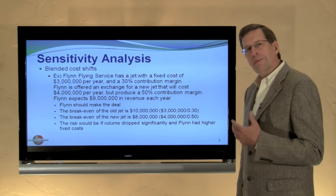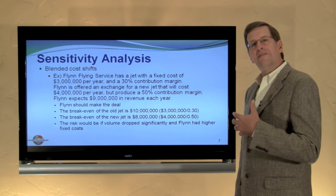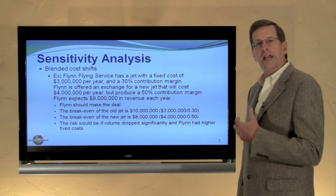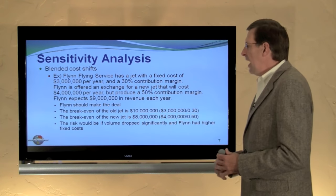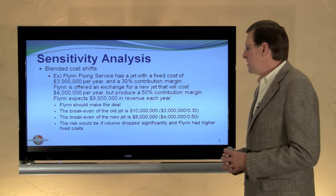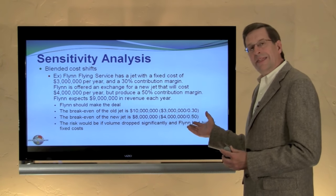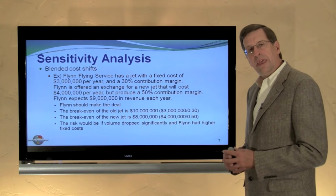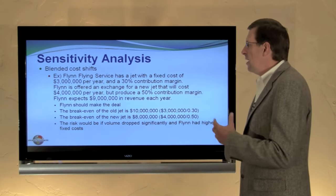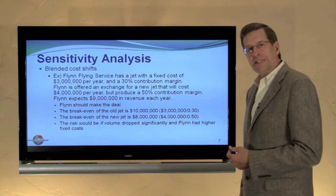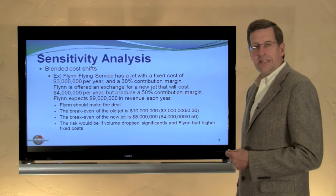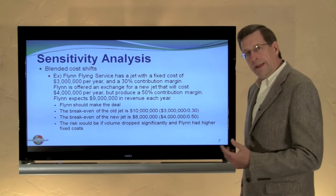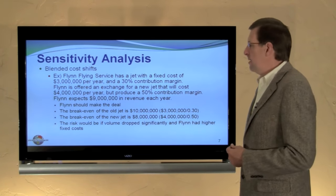This should help you appreciate how significant it is to understand your contribution margin ratio and fixed cost structure, and how quickly you can analyze business decisions. Of course this could be a double-edged sword — if volume levels did not reach nine million or dropped below eight million, we may find we're better off keeping the existing jet. Our assumptions need to be valid for our analysis to be valid.